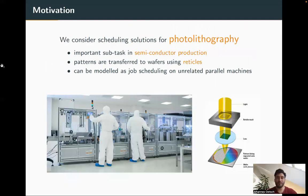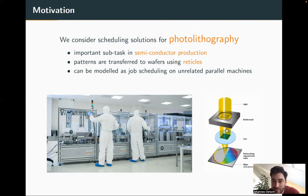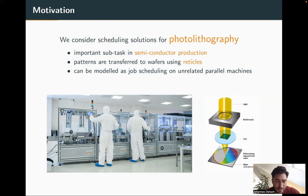Photolithography is a quite important sub-task in semiconductor production — this is the part where patterns are transferred using reticles, which are photo masks, onto wafers. UV light passes through the photo mask and writes the pattern on the wafer. Typically in these work centers there are many jobs to be processed using quite expensive equipment, often posing a bottleneck in the production process. We want to model this as job scheduling on unrelated parallel machines.